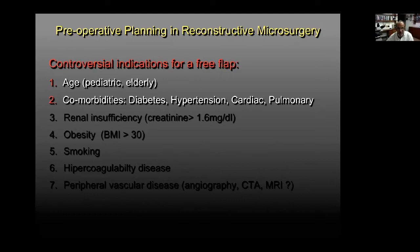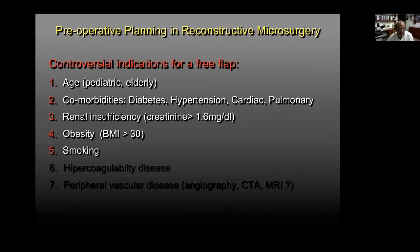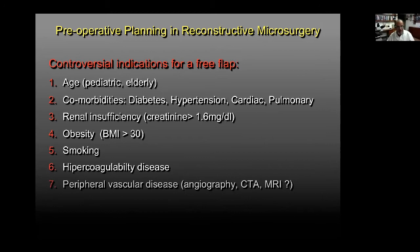High BMI is not a contraindication for a free flap but is associated with higher incidence of partial flap necrosis. Tobacco use doesn't affect the patency of microvascular anastomosis but increases incidence of wound necrosis at the donor and sometimes recipient site. Peripheral vascular disease may be the only true contraindication, with a linear association between higher morbidity and this condition. In these patients, imaging studies are essential to assess the microvascular anatomy and select correct recipient vessels.